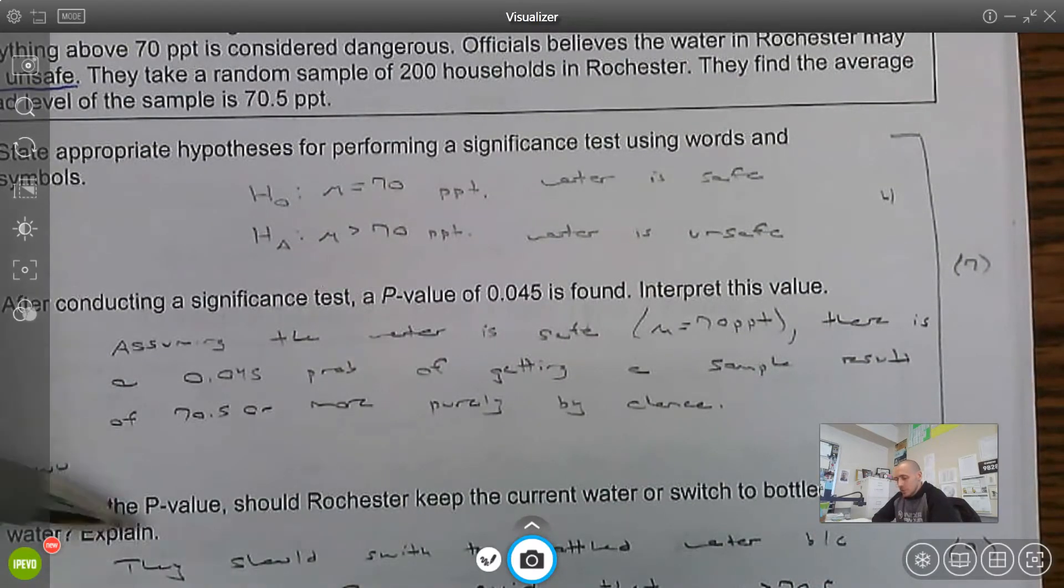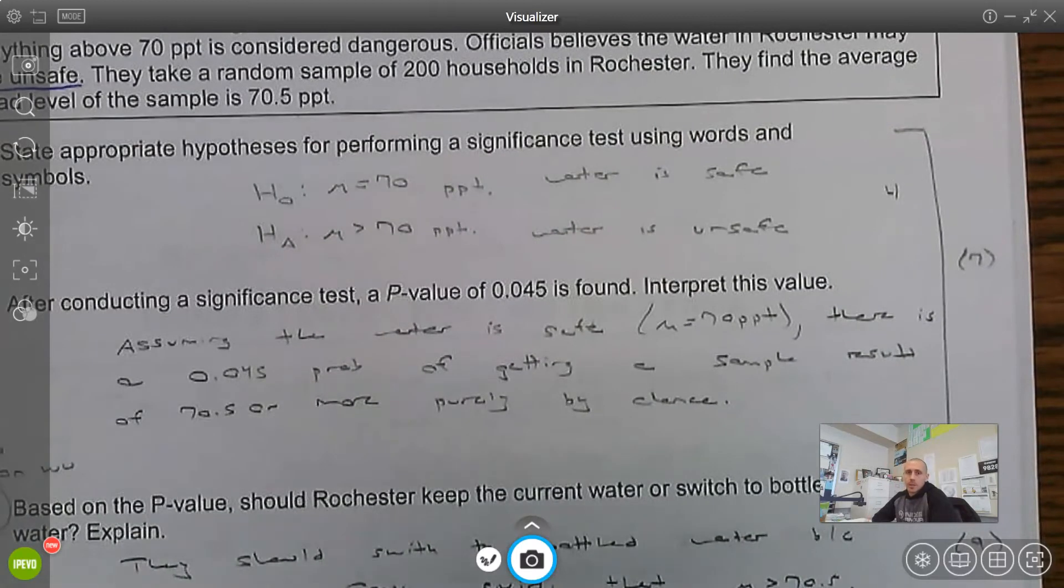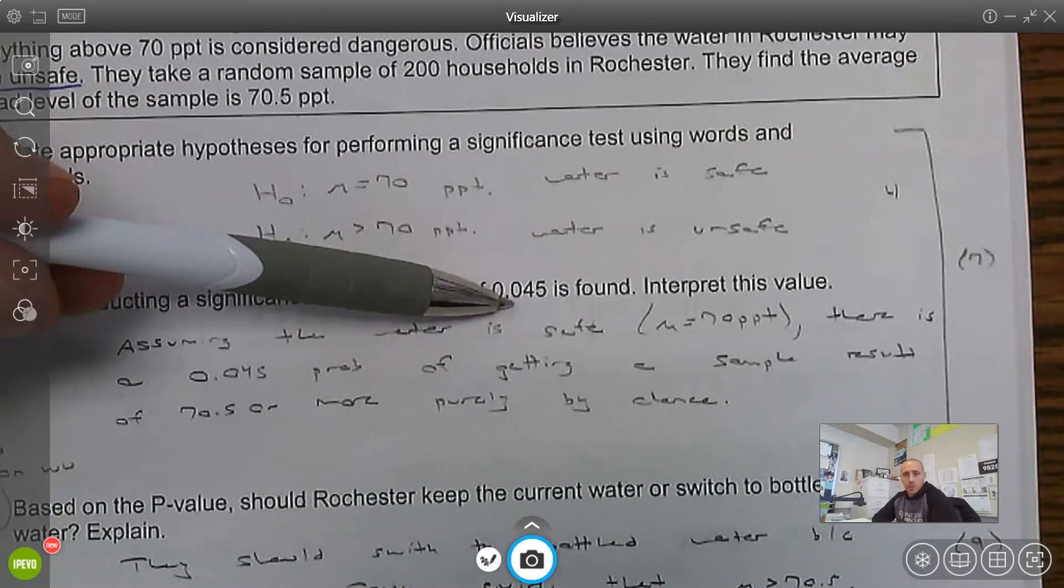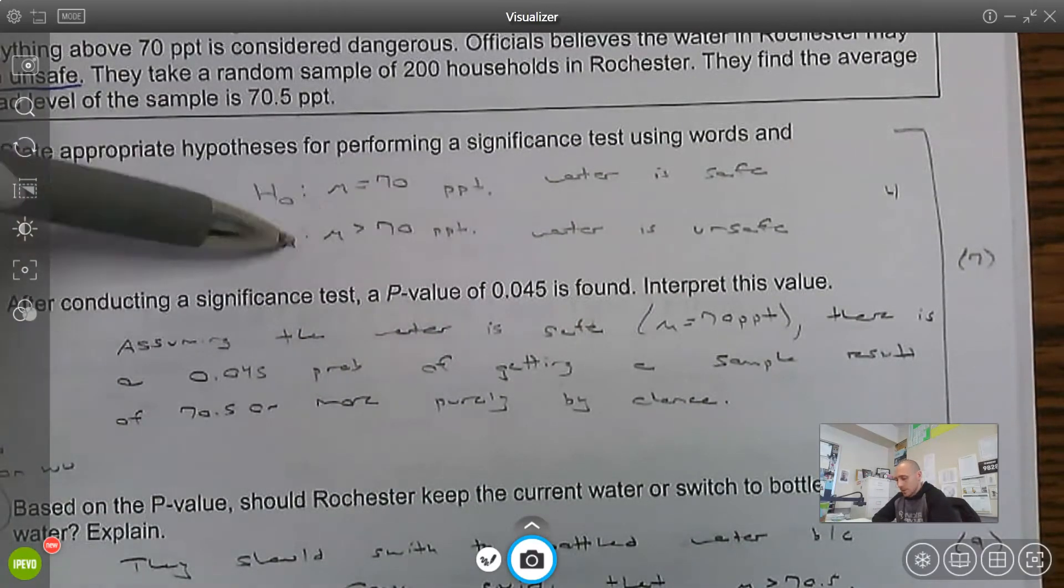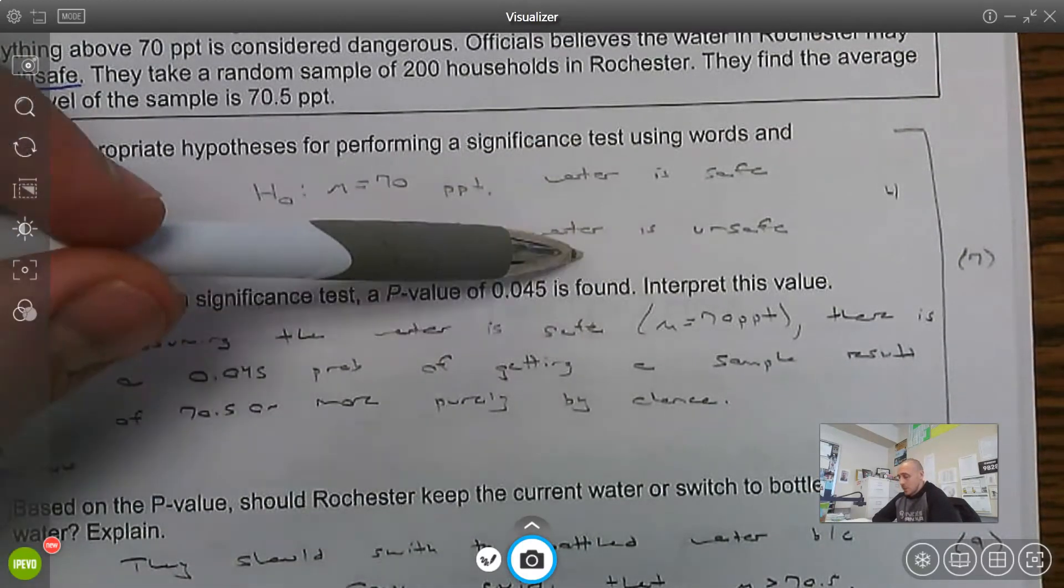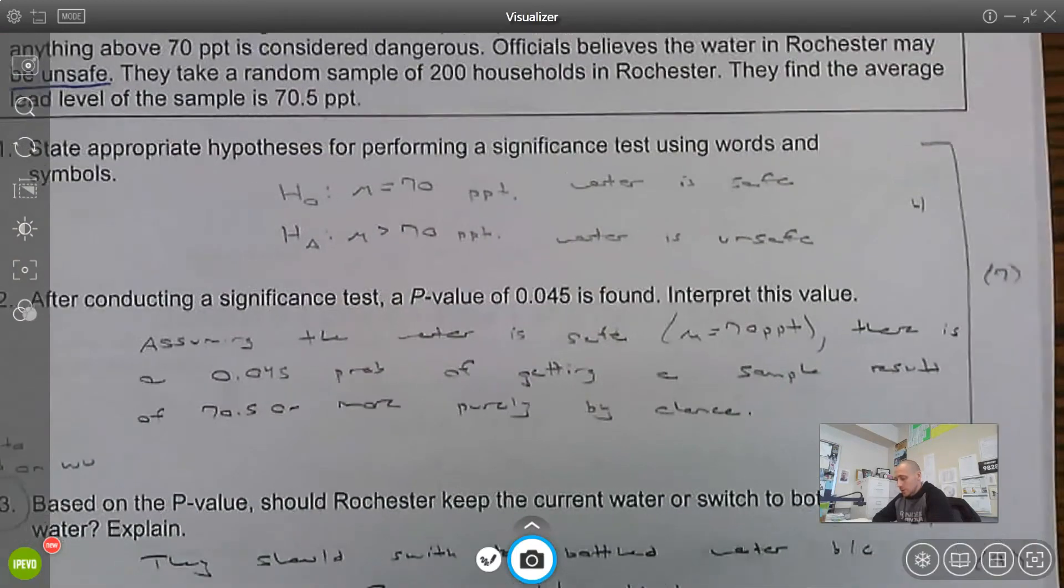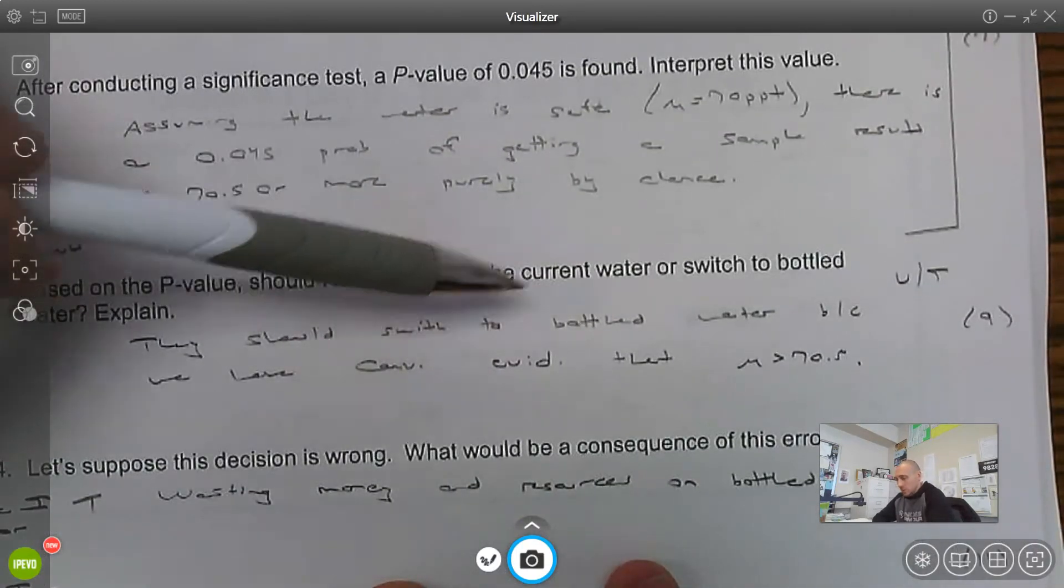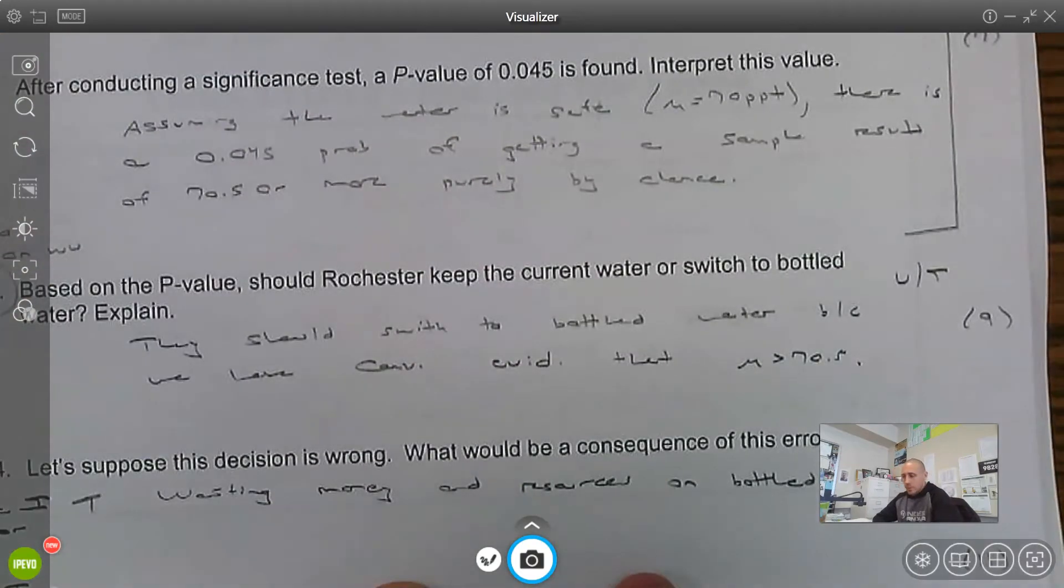Number three, based on the p-value, should we keep the current water or switch? Well, let's think about our conclusion. We would reject the null because the p-value is less than alpha equals 0.05. So we would have convincing evidence for the alternative. Because we have convincing evidence for the alternative, that means we're concluding that the water is not safe. So we should switch to bottled water.